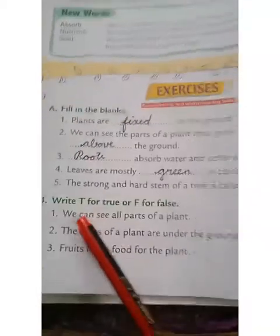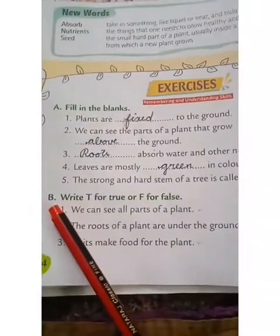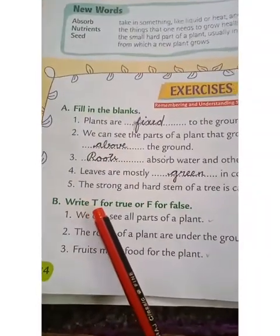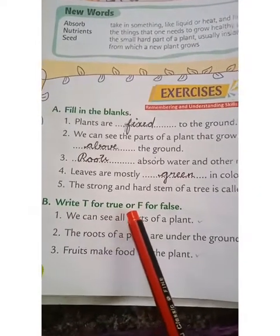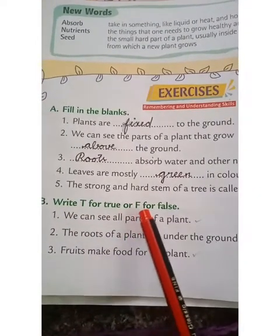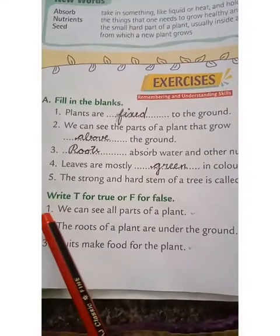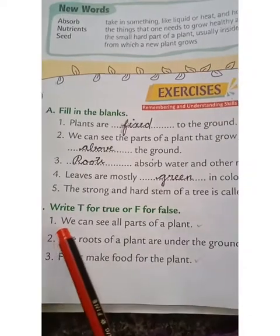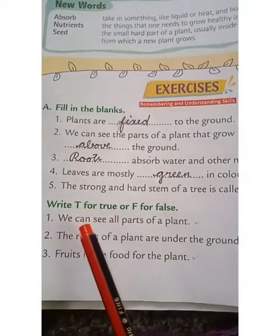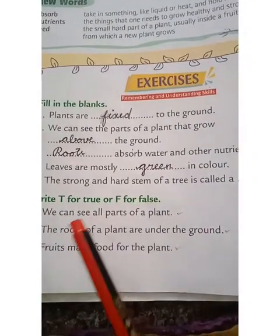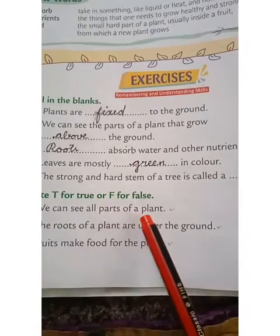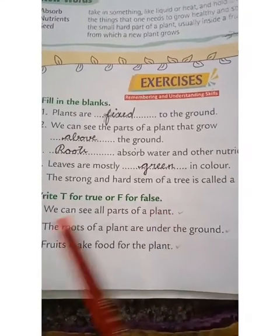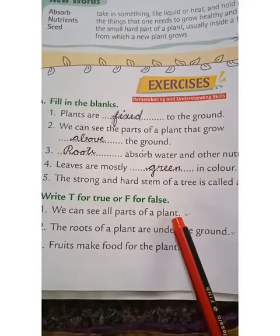Then, B: write T for true or F for false. First one: we can see all parts of a plant.